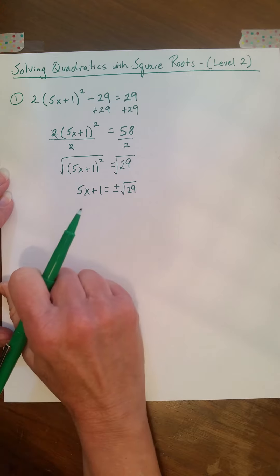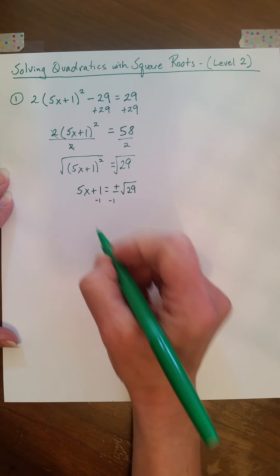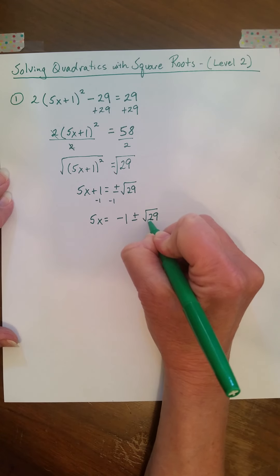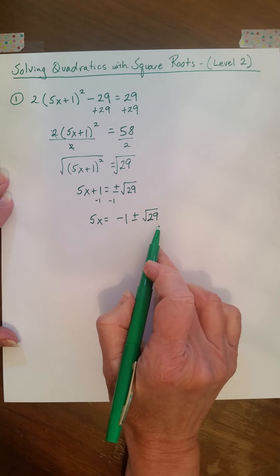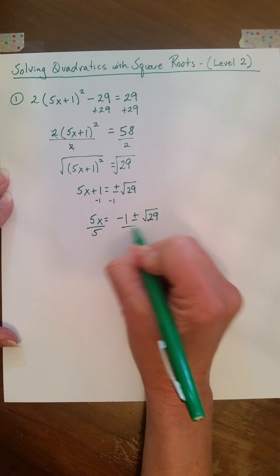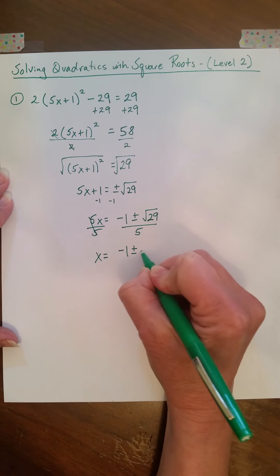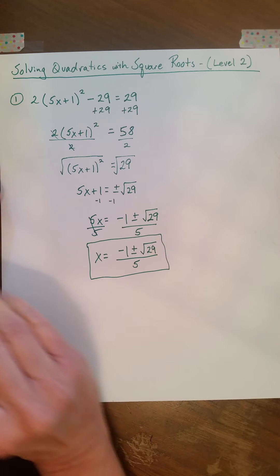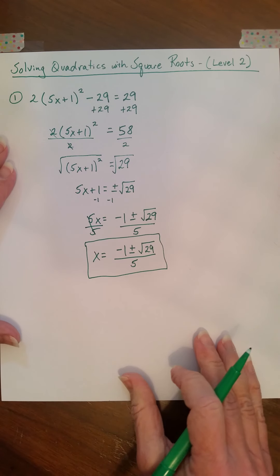Okay, now this looks a little unusual. I'm going to show you how we're going to answer this. We need to isolate x, so I need to subtract 1 from both sides. So 5x equals negative 1 plus or minus the square root of 29. These two cannot be combined right now because here I have a constant, so I'm going to leave it like that. Now to solve for x, I need to divide by the coefficient 5. So x equals negative 1 plus or minus the square root of 29, divided by 5. That's our answer.